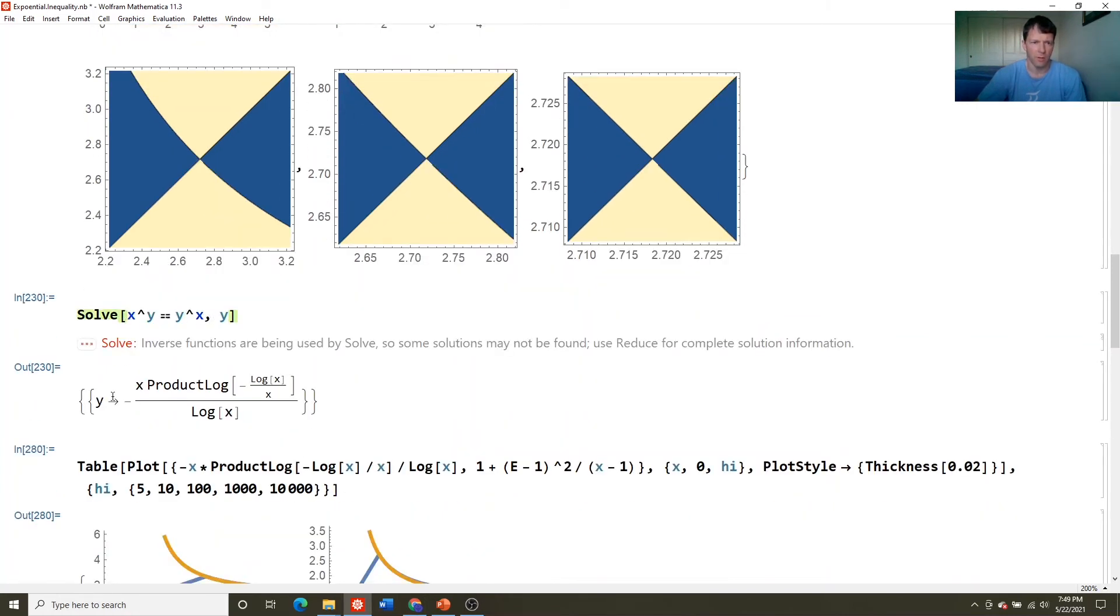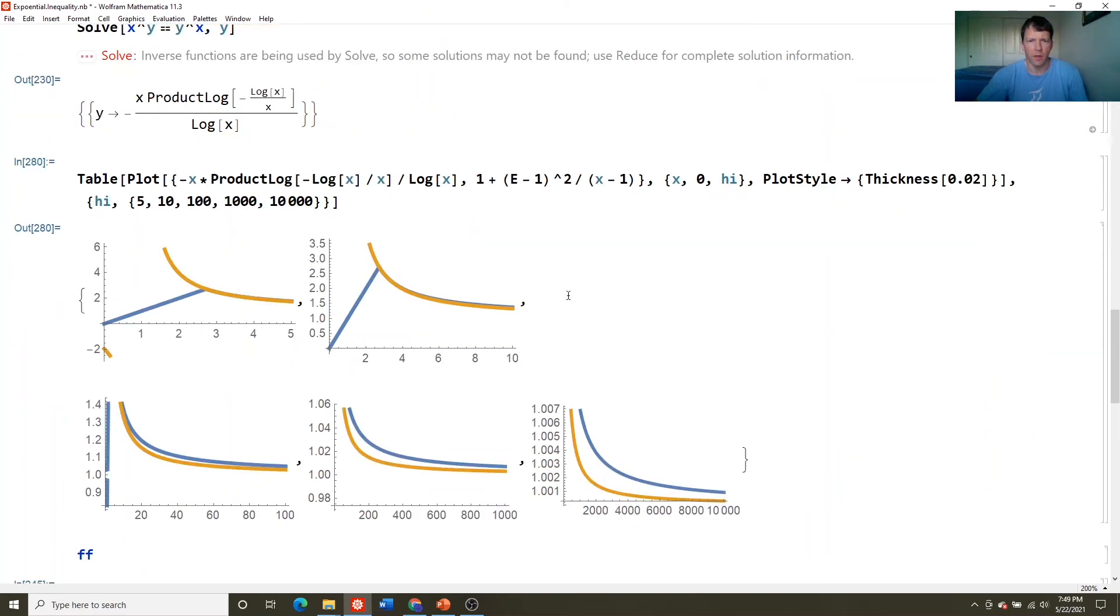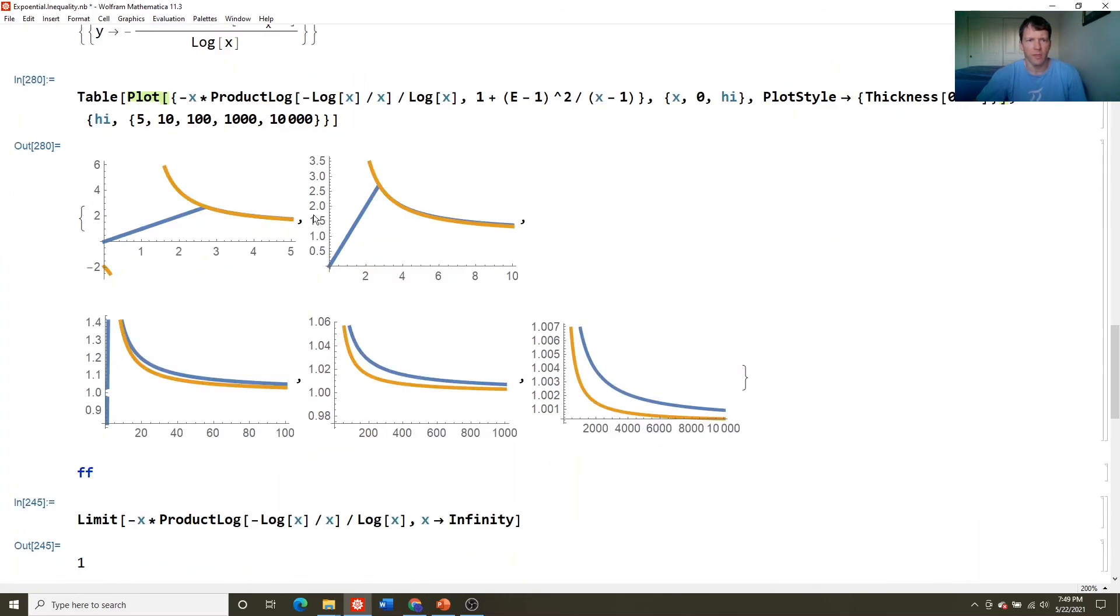And here I asked Mathematica to solve this equation. x to the y equals y to the x. And you get this crazy thing. This product log, this is the Lambert W function. This is the inverse of the function y equals x times e to the x. And here's just looking at that approximation. So here's the exact inverse function. And here's that hyperbola thing that I just, just the hyperbola scaled to fit that.